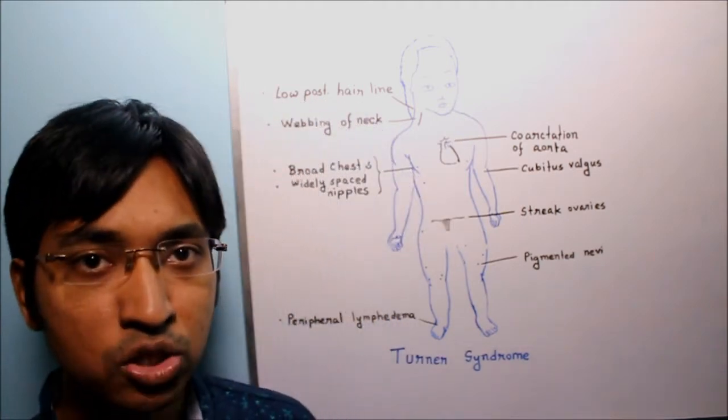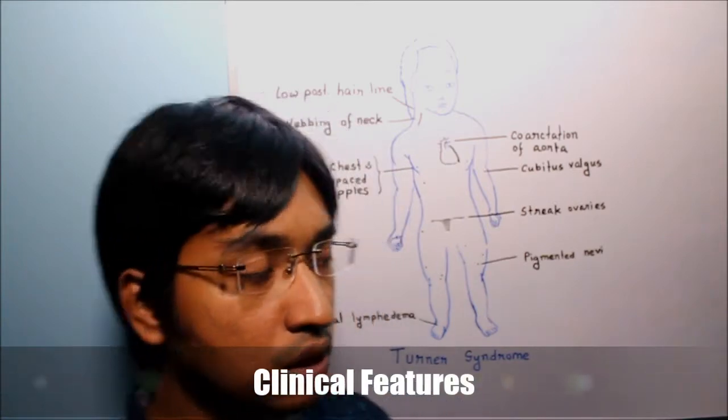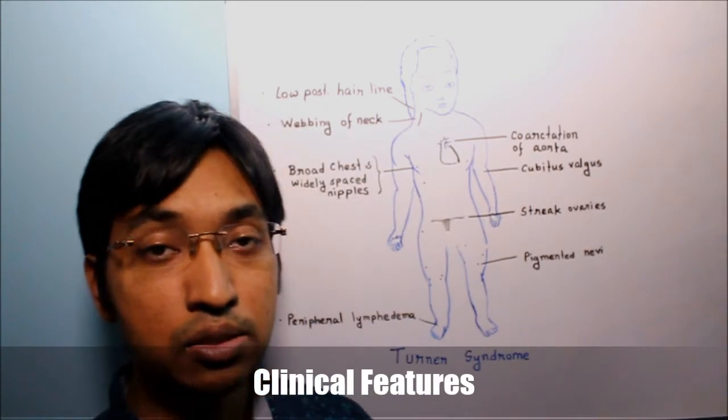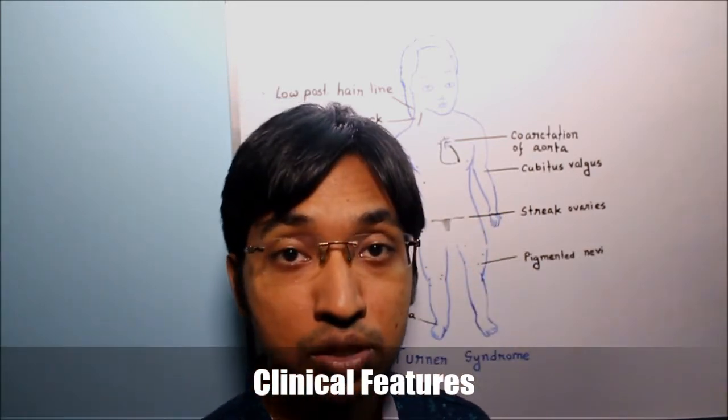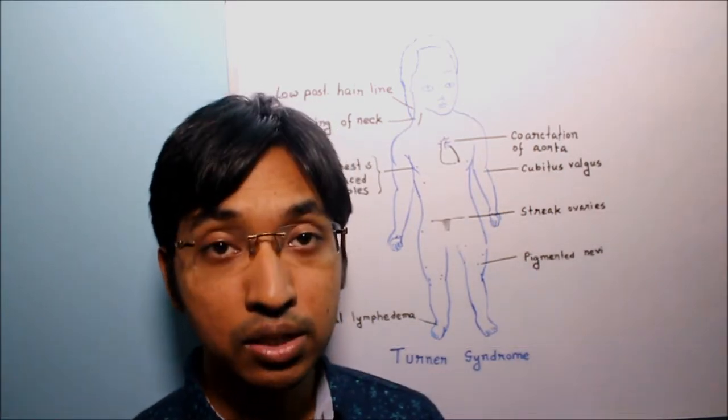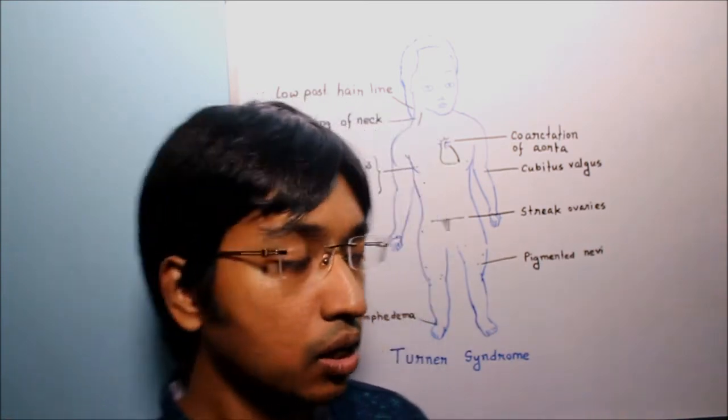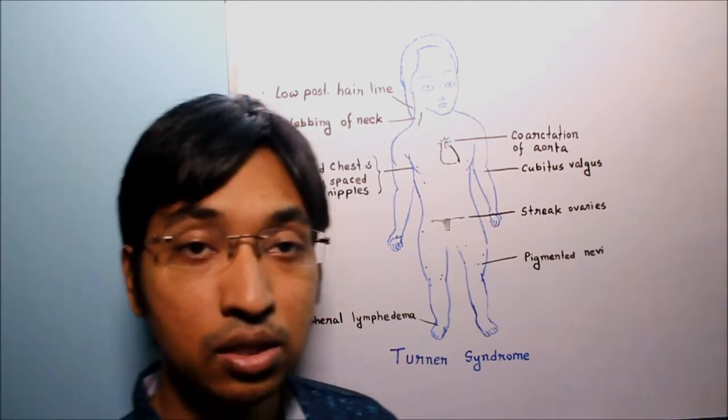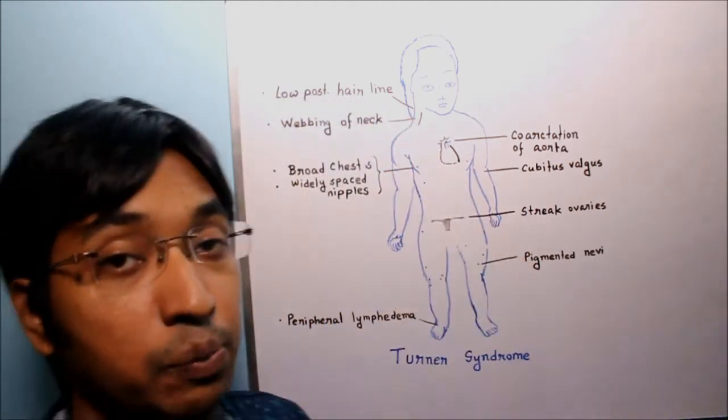First we will talk about the clinical features of Turner syndrome. As you can see in the whiteboard I have already drawn an image that is showing the major clinical features of Turner syndrome. Always remember severely affected individuals of Turner syndrome generally show edema of dorsum of hand and foot and they will also show swelling of nape of the neck.